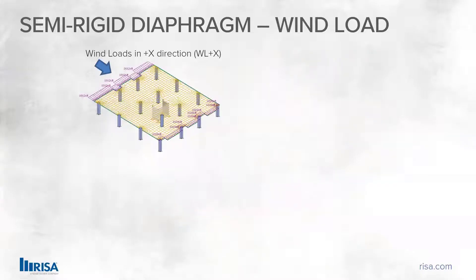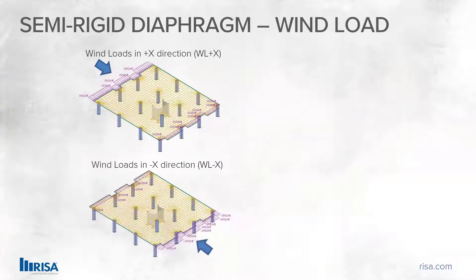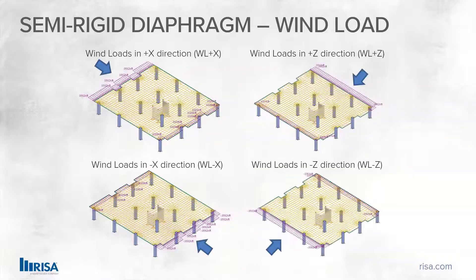The final type is using semi-rigid diaphragms, and the distribution or application of load depends a bit on whether you are applying a wind or seismic load. Wind load is just applied as a line load on the edge of the diaphragm in the positive or negative X direction, or positive or negative Z direction. That load is then dragged through the entire plated diaphragm.